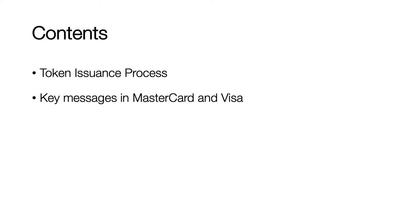To give a quick recap of what we spoke about in the last video: the overall tokenization issuance process comprises four different steps. First is the token assurance process, which validates if the card and the customer are valid. Token generation is where we generate a token number. Token issuance is where we generate all the associated data required along with the token. Finally, token provisioning is where the token number and associated data — like EMV data — are pushed to the end device.